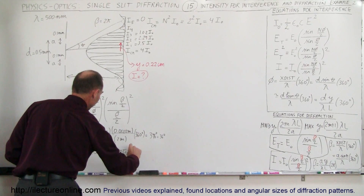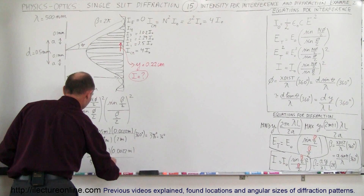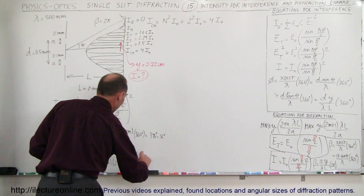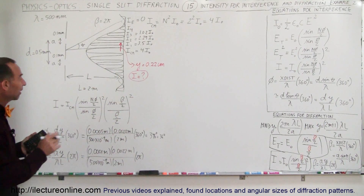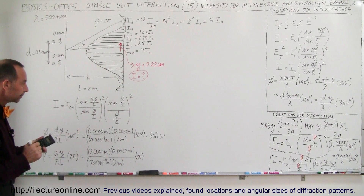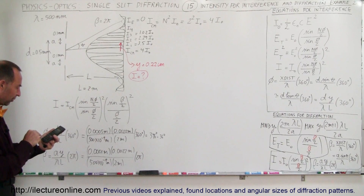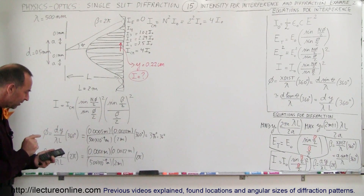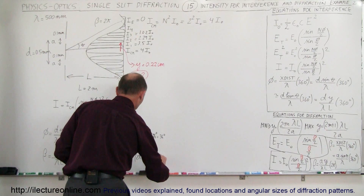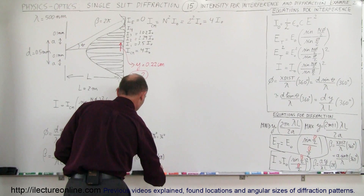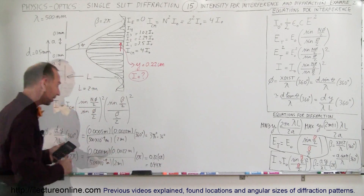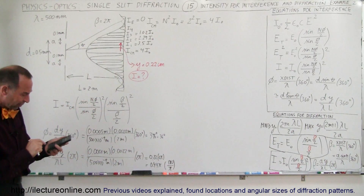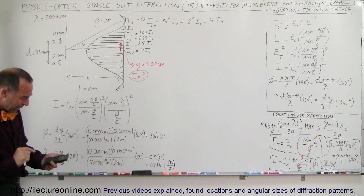Now the phase difference for the diffraction pattern: that uses the slit width of 0.0001 meters times 0.0022 meters, divided by 500 × 10⁻⁹ meters, divided by the screen distance of 2 meters, times 2π — converting to radians because we need radians in the denominator. That gives 0.22 times 2π, which equals 0.44π. Converting to degrees: 0.44 times 180 gives us 79.2 degrees.